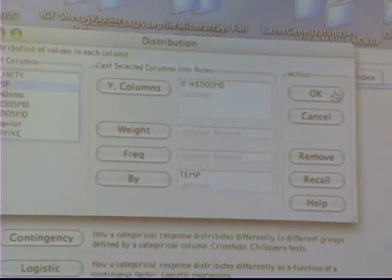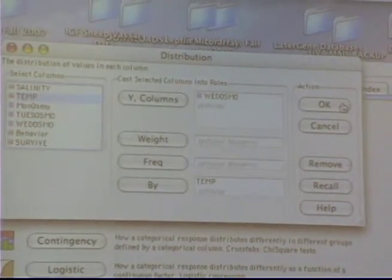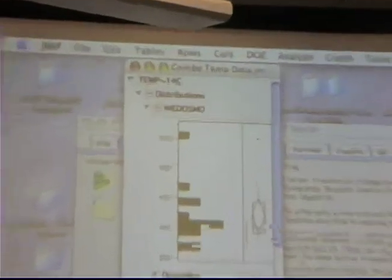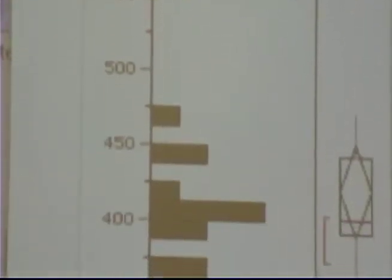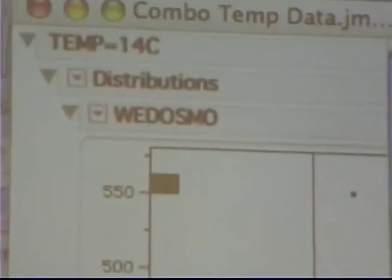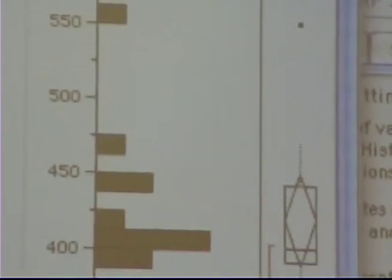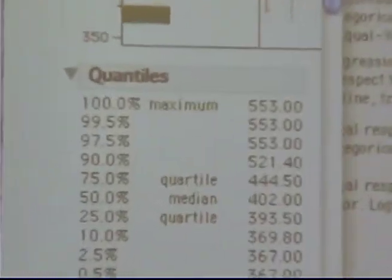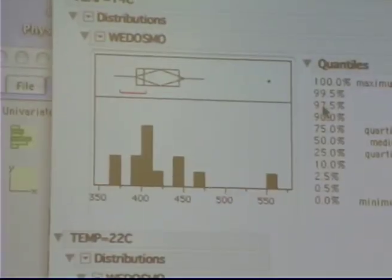So, it's going to take all the values that are reported for the Wednesday osmolarity measurements, and it's going to look at the distribution by each temperature that we had, 4 degrees, 14 degrees, 22 degrees. If you look at the top, it says 1014C, and then this is a vertical distribution of that histogram. I can go into display options and go horizontal if I want.